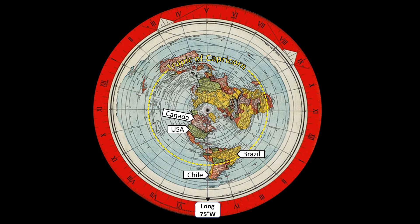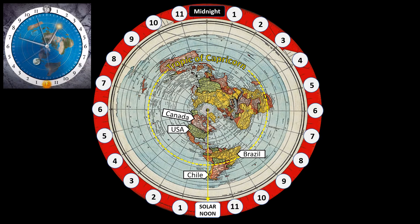You can see that this longitude cuts across the east coast of the United States here and across the west coast of South America. I have also highlighted the Tropic of Capricorn. And like Dave's app, I have added the 24 hours of the day, which are represented by every 15 degrees of longitude, with solar noon down here at the bottom.